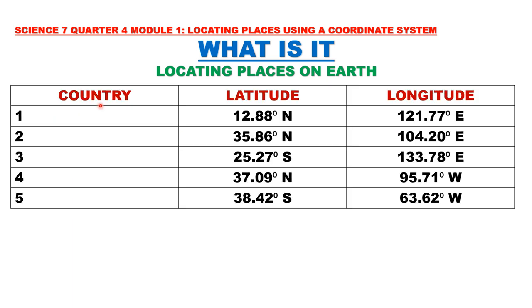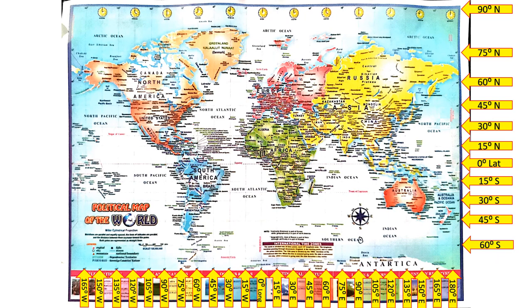Let us try to identify the country given only the latitude and the longitude. Number 1: 12.88 degrees north, 121.77 degrees east. Number 2: 35.86 degrees north, 104.20 degrees east. Number 3: 25.27 degrees south, 133.78 degrees east. Number 4: 37.09 degrees north, 95.71 degrees west. Number 5: 38.42 degrees south and 63.62 degrees west. Let us first take a look at this world map — all horizontal lines are latitude and all vertical lines are longitude.